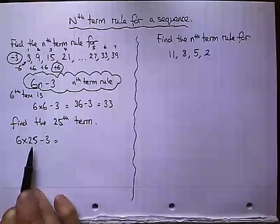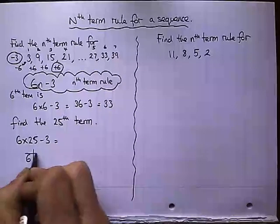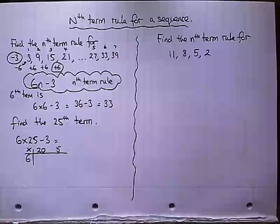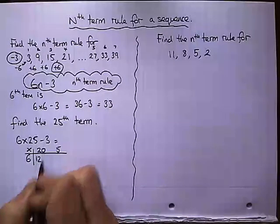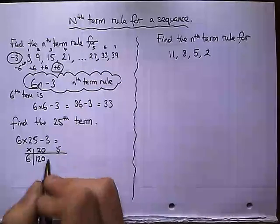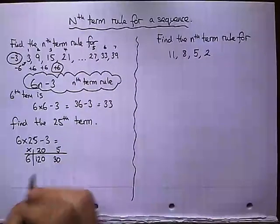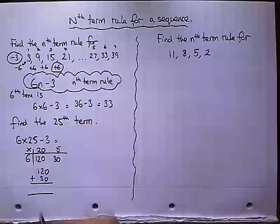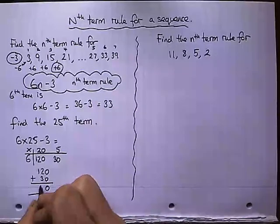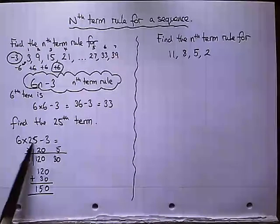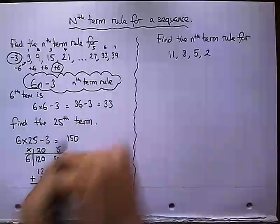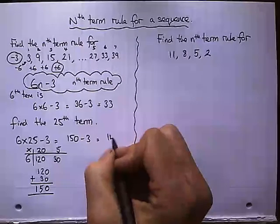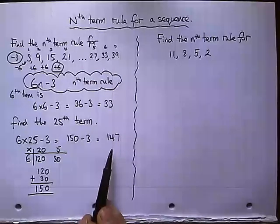Right. So I've got to work out what's 6 times 25. Well, let's do that grid method. 6 times 2 is 12, with 1 zero in the 20. 6 times 5 is 30. So now I need to add these two together. 120 plus 30 equals 150. So 6 times 25 is 150. Take off 3, we get 147. So the 25th term is 147.